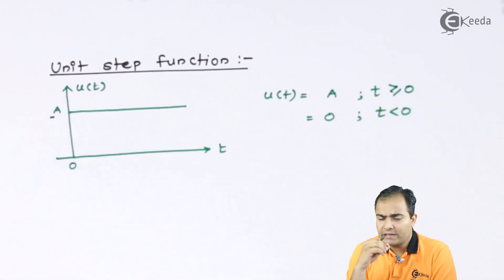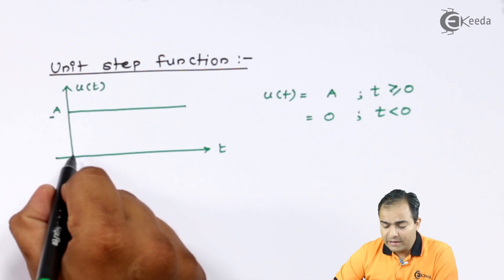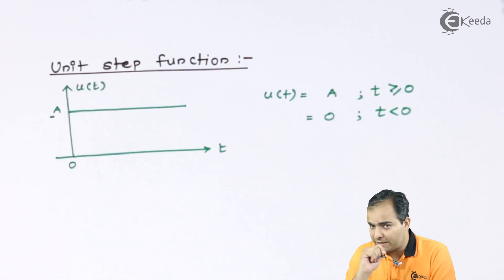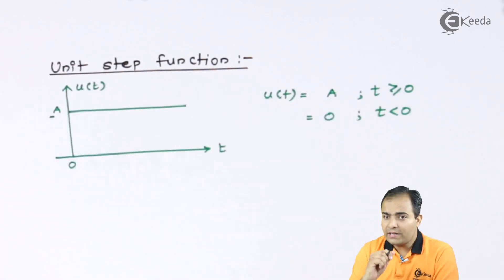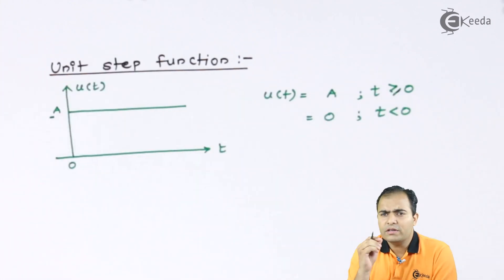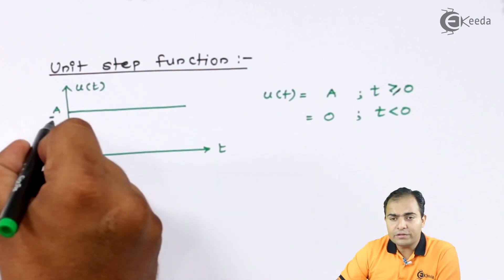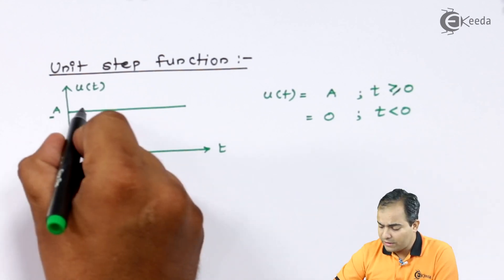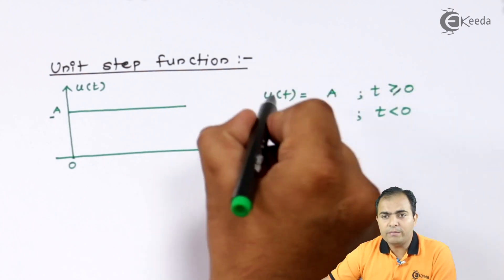I have written if the time period is greater than 0, means what? This is 0, and if the time period is greater than 0 means 0 onwards towards the positive side, then amplitude of that graph is A. Similarly, one more thing is mentioned: at t equals to 0, the amplitude of that function is also A. So, look here at t equals to 0, the amplitude is also A, and for t greater than 0, this amplitude remains the same. So, what I have written: for t is greater than or equal to 0, amplitude is A.